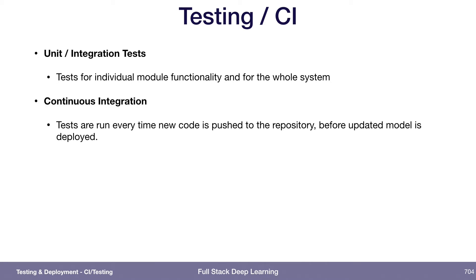Continuous integration means that you run your tests and maybe some other software development processes like linting every time you push code to your repository and before you deploy anything. Continuous because every time you push, and integration because it runs all the tests.